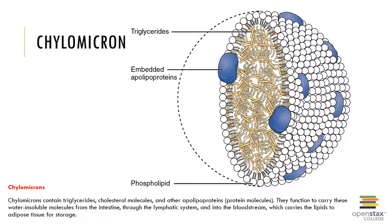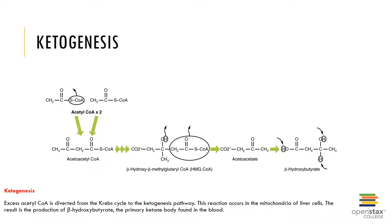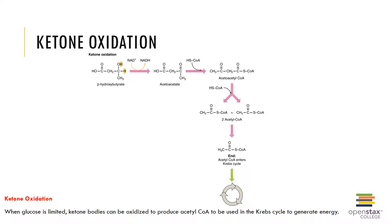Chylomicrons function to carry water-insoluble molecules from the intestine through our lymphatic system and into the bloodstream, and carry lipids to adipose tissue for storage. Ketogenesis occurs when acetyl-CoA is diverted from the Krebs cycle into the ketogenesis pathway. This reaction also occurs in the mitochondria and results in the production of beta-hydroxybutyrate, which is the primary ketone body found in the blood. Keto-oxidation is appropriate when glucose is limited and ketone bodies can be oxidized to produce acetyl-CoA and then can be used to generate energy.